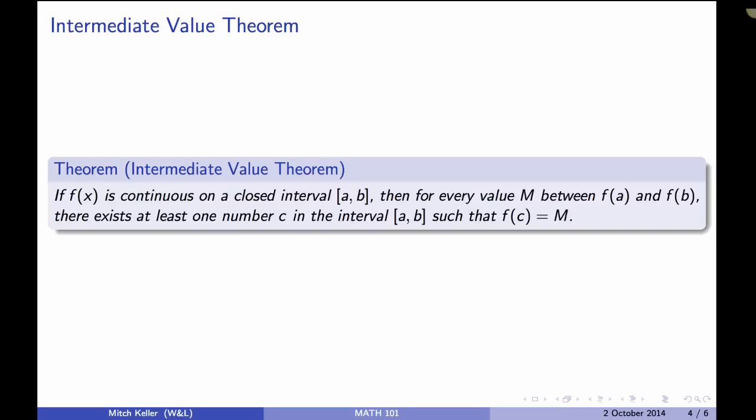So here's what the intermediate value theorem says, a reminder of your reading. It says if f(x) is a continuous function on a closed interval [a,b], then for every value m, so we're thinking m is a real number, between f(a) and f(b). Now, f(a) might be less than f(b), f(b) might be less than f(a). This isn't really useful if f(a) equals f(b), because then there are no numbers between them. So for every number m between f(a) and f(b), there exists at least one number c in the interval (a,b), such that f(c) equals m.